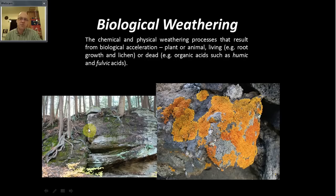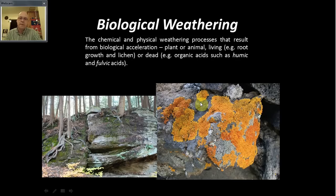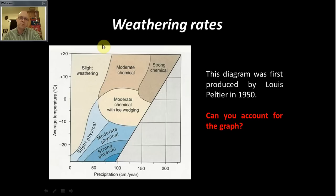Biological weathering is all about physical pressure exerted by things such as roots — you can see roots destroying what looks like a layered limestone rock. Equally, biological processes can accelerate chemical processes; here's a lichen sitting on a rock, and lichens will dissolve the rock surface. It's important to consider biological weathering separately, but the smart person will recognize it's really just an acceleration of chemical and physical processes.